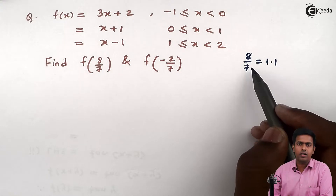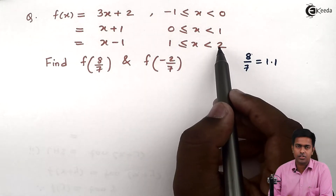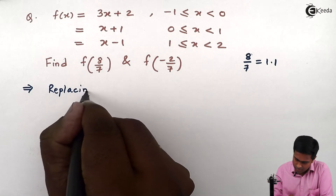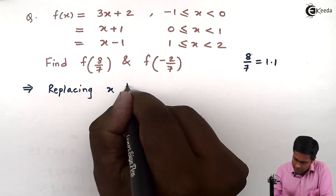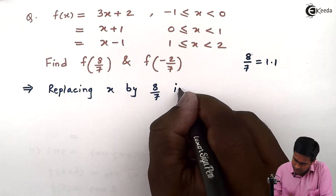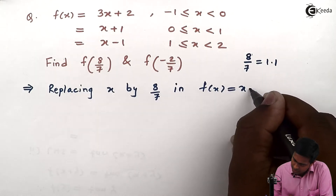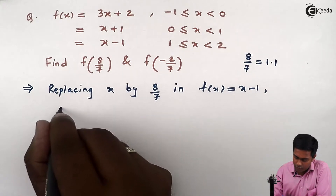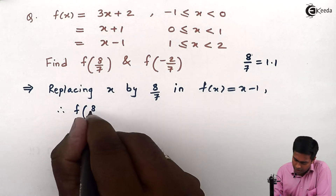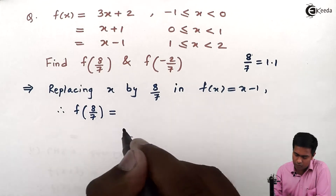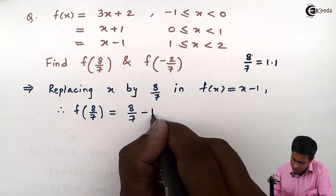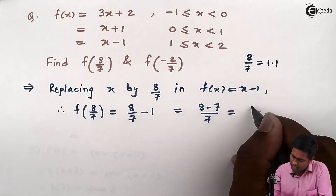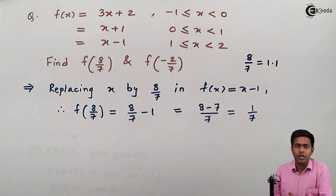Since the point 8 upon 7 lies in the third range, replacing x by 8 upon 7 in f of x equal to x minus 1, therefore f of 8 upon 7 equals 8 upon 7 minus 1, which is equal to 8 minus 7 upon 7, and the answer is 1 upon 7.